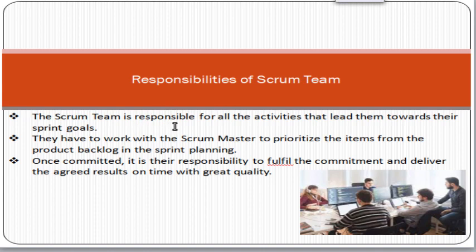The scrum team is responsible for all the activities that lead towards their sprint goal. A sprint is a three to four week time period. The sprint goal means, for example, if there are 40 tasks in total and you took 10 tasks for a sprint, the sprint goal is to complete those 10 tasks for that sprint.